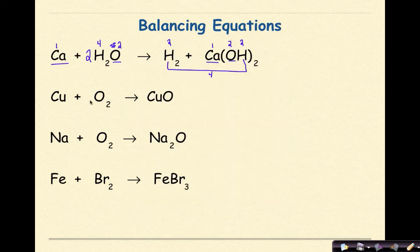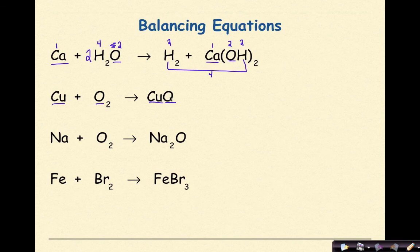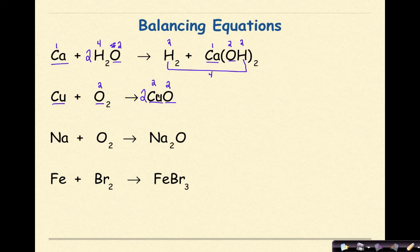Welcome back. Let's see how you did. Copper plus oxygen gives copper 2 oxide. I have 1 copper, 1 copper. I have 2 oxygens on the reactant side but only 1 oxygen on the product side, so I'll throw a coefficient of 2 in front of CuO — that gives 2 oxygens each side. But now I need to rebalance copper: that 2 means 2 coppers on the product side, so I put a 2 in front of Cu. Now it's balanced.